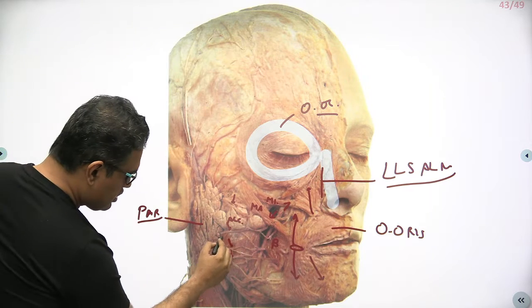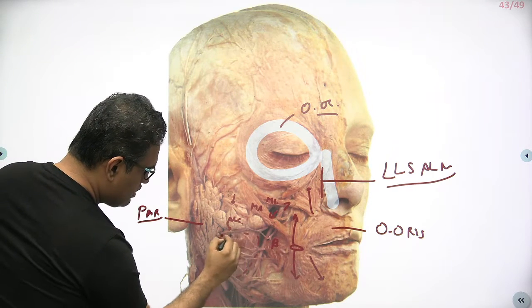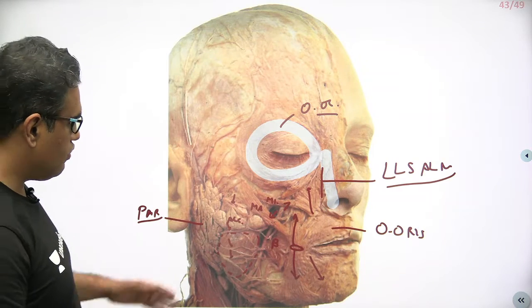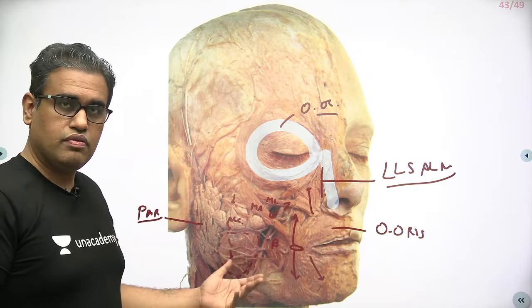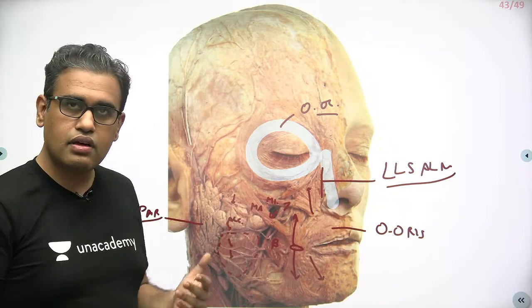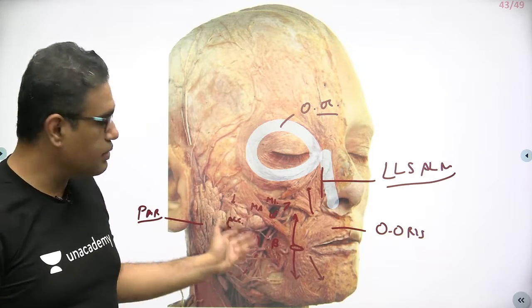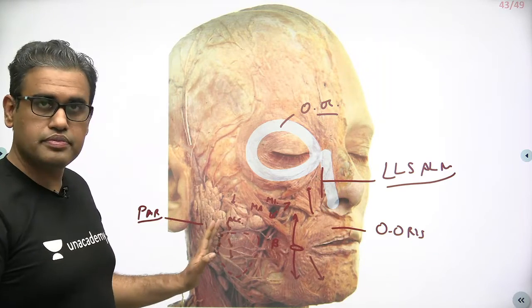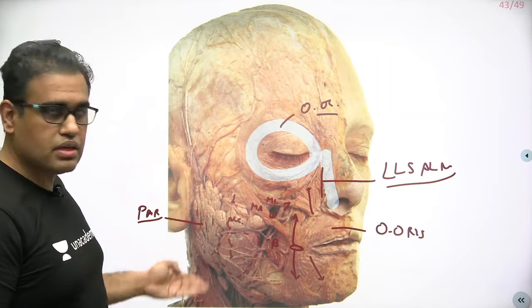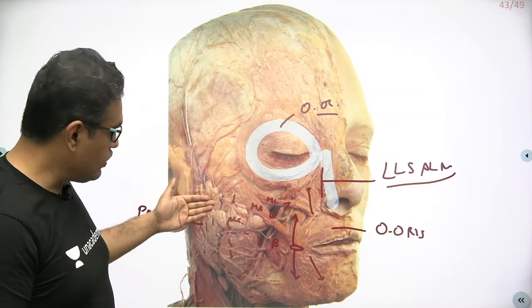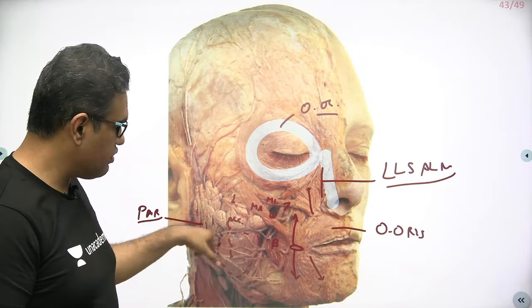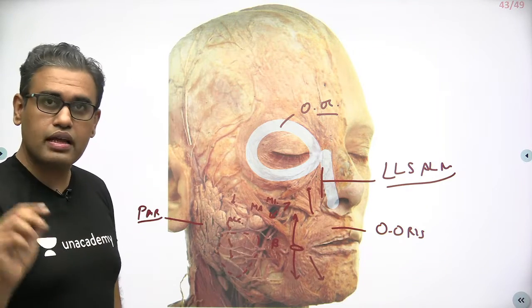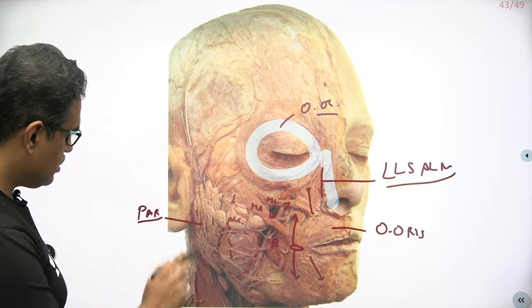There is a muscle over here — this is not a facial muscle, it is a masticatory muscle. We saw this muscle outside the mandible in the previous image — the masticatory muscle is the masseter. It is covering the mandible from outside, and the parotid is over it. The parotid duct runs superficial to the masseter muscle. The masseter is not supplied by the facial nerve — it is supplied by the mandibular nerve. That is different.